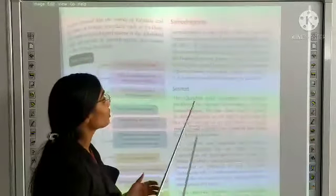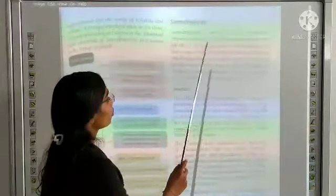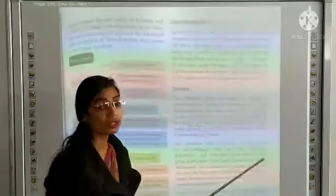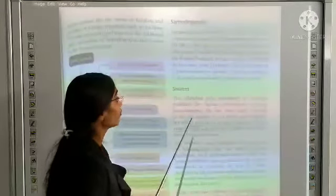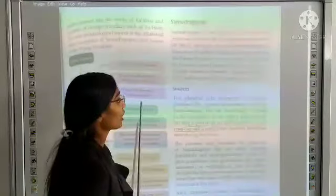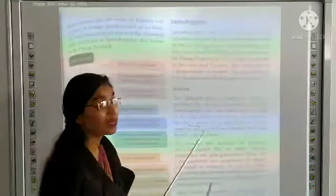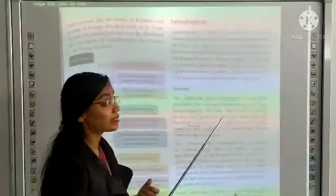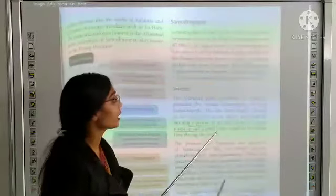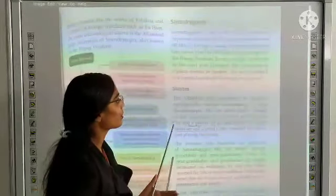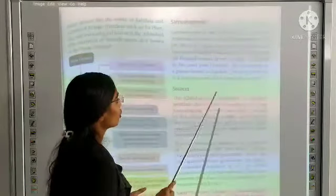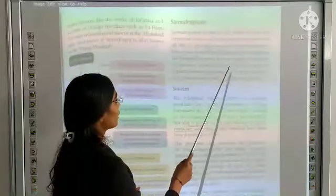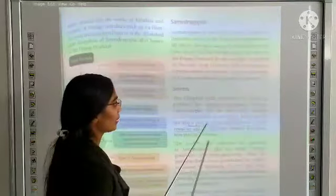Next is Samudragupta. He was one of the most famous and important rulers of Gupta Empire. He ruled from 380 CE. The main source of his information is in Allahabad, where there is a pillar inscription called Prayag Prashasti. That's why we get all the knowledge about Samudragupta. It was composed by his court poet, Harisena.